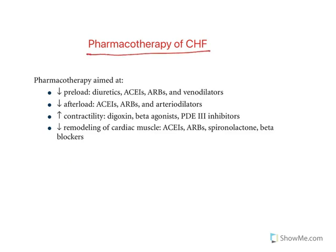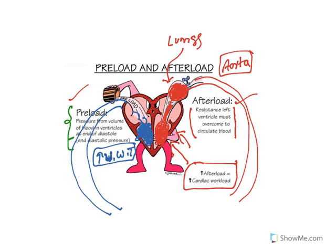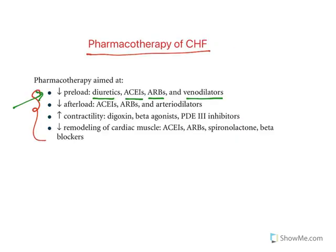Pharmacotherapy involves four major classes. The first goal is to reduce preload, using diuretics, angiotensin converting enzyme inhibitors, angiotensin receptor blockers, and venodilators. Preload is related to venous return — if you dilate the veins, venous drain will reduce, and if it is reduced, preload is reducing. So venodilators act to reduce preload. The next class is about reducing afterload, using angiotensin converting enzyme inhibitors, angiotensin receptor blockers, and arteriodilators.